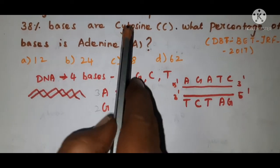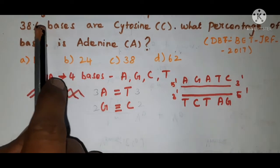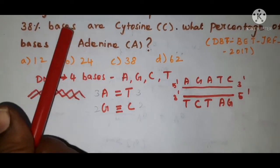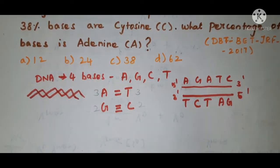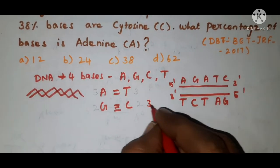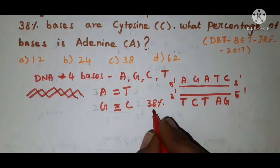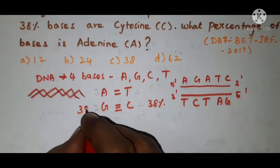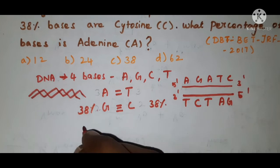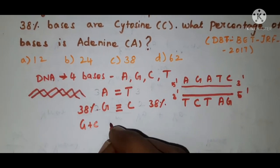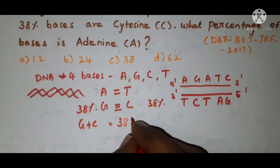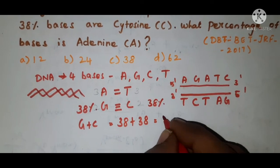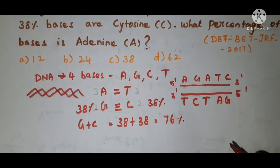Now coming to the problem: they have given the percentage composition of cytosine, that is, the percentage of cytosine is 38 percent. Cytosine is 38 percent means guanine is also 38 percent. So G plus C is equal to 38 plus 38, that is equal to 76 percent.